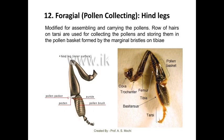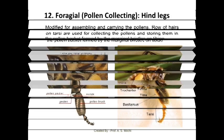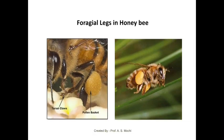The hind pair of legs in honey bee is also called the corbicular or foraging type of legs, specially modified for pollen collecting purpose — for assembling and carrying pollen. Rows of hairs on the tarsus are used for collecting pollen and storing them in the pollen basket formed by the marginal bristles on the tibia. The pollen basket is present at the tibia of the hind legs, where the honey bee collects and stores pollen. You can see the yellow colored pollen basket present at the tibia of the hind legs.